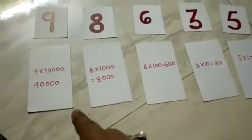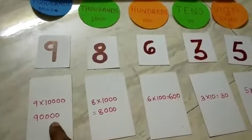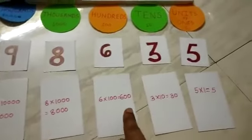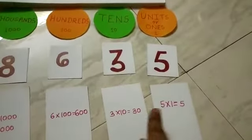So each digit, the value is this: 90,000, 8,000, 600, 30, and 5.